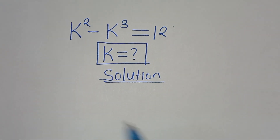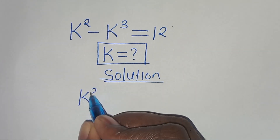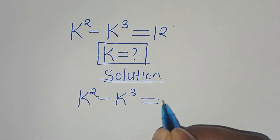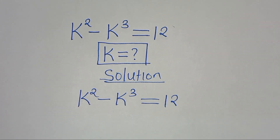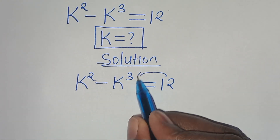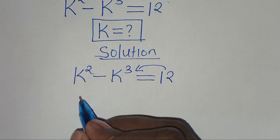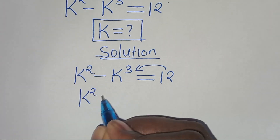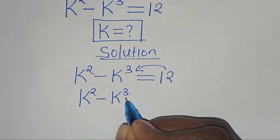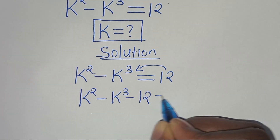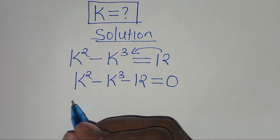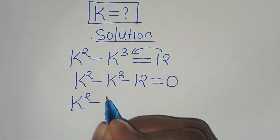We have k squared minus k to the power of 3, equal to 12. The first step is to move 12 to the left hand side, so we have k squared minus k to the power of 3 minus 12 equals 0.